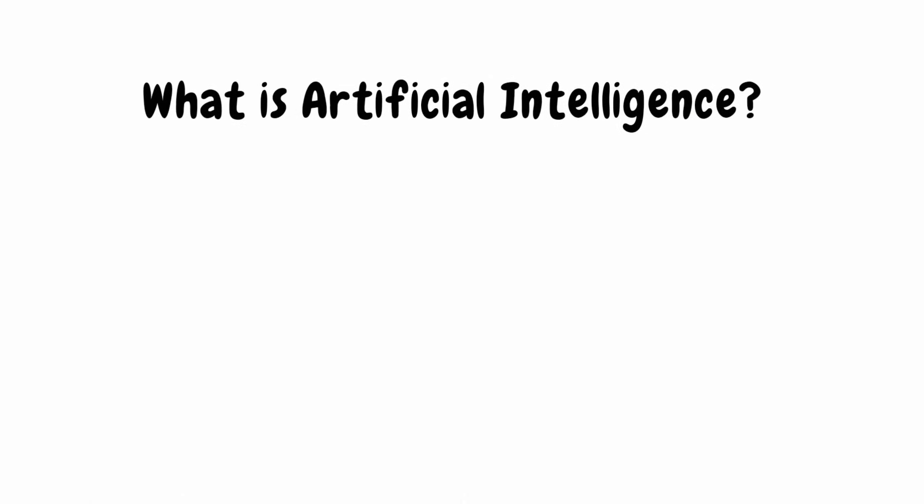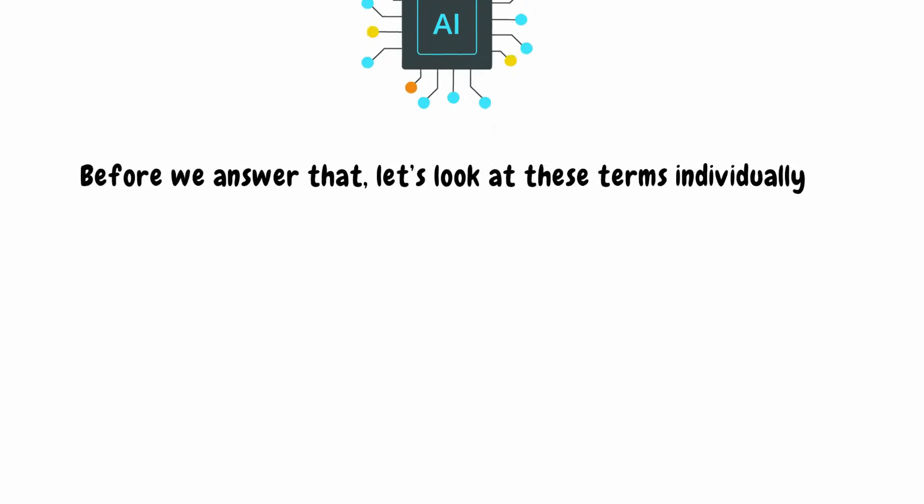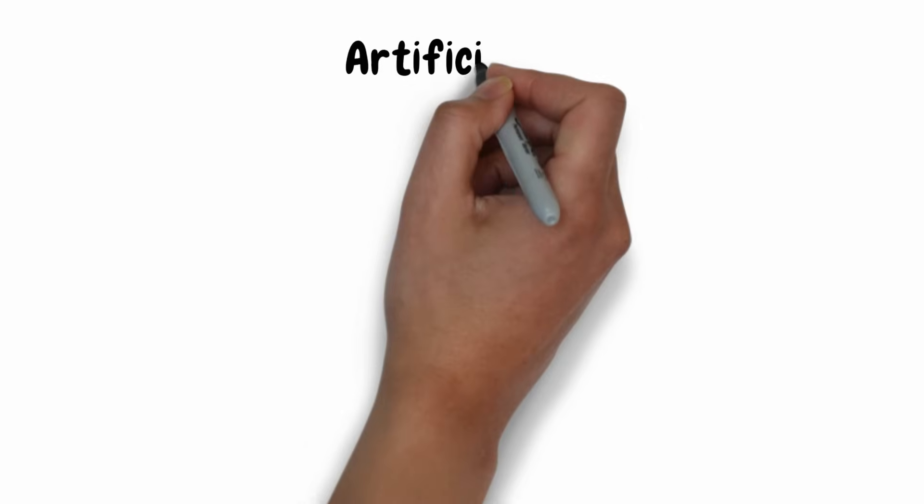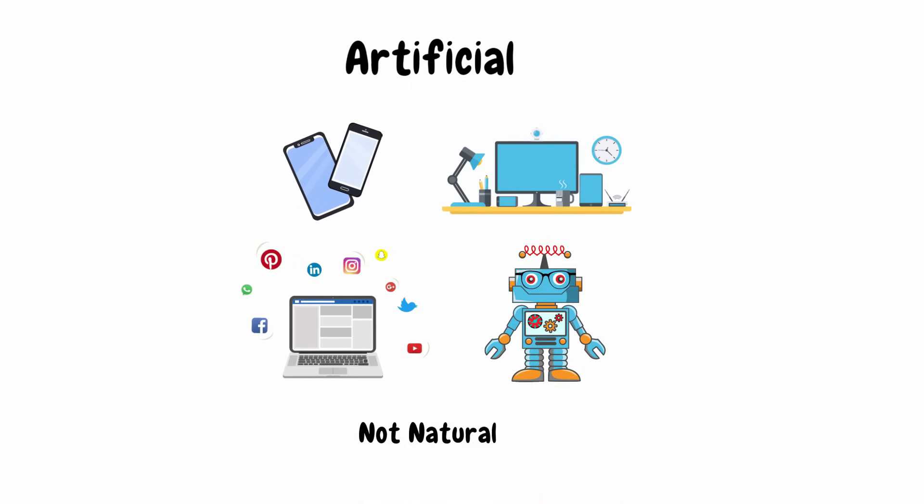What is artificial intelligence? Before we answer that, let's look at these terms individually. What do you understand by the term artificial? Well, it can be anything that is made by humans, things that are non-natural.